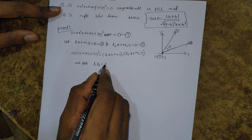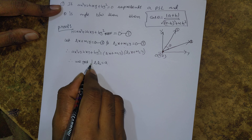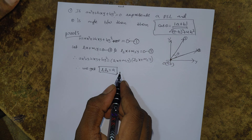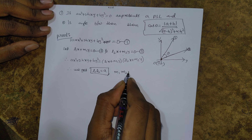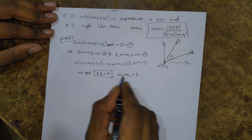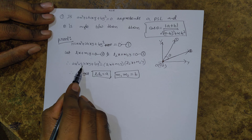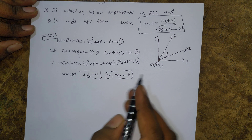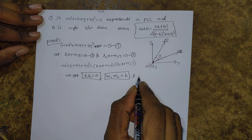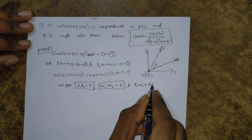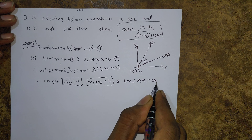Therefore we get: L1·L2 = a, M1·M2 = b, and L1·M2 + L2·M1 = 2h. These are the coefficient values obtained by comparing the product of the two line equations with the given homogeneous equation.